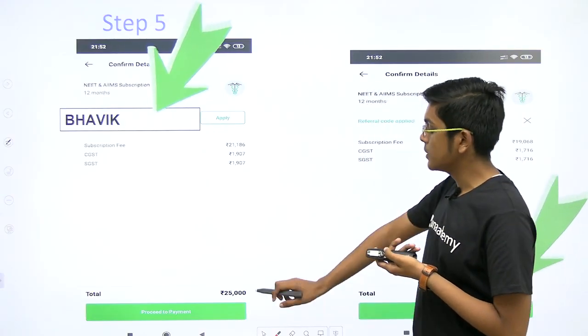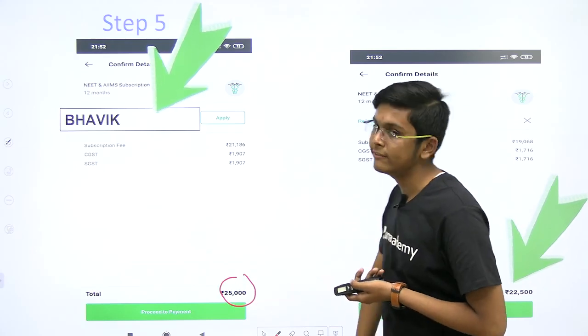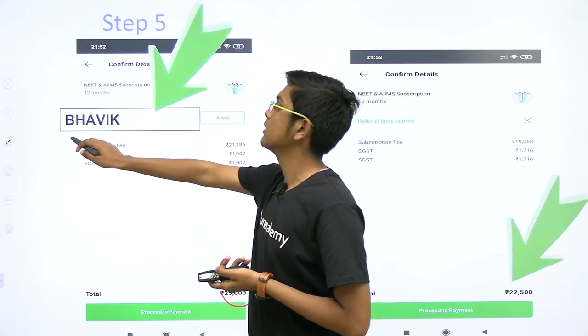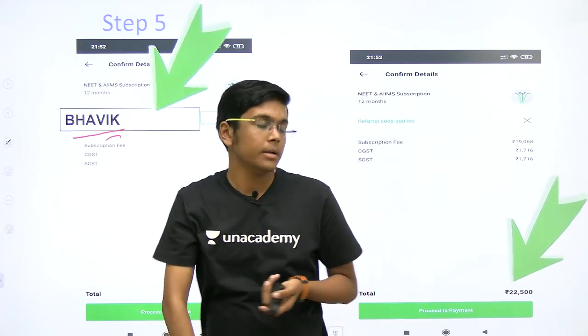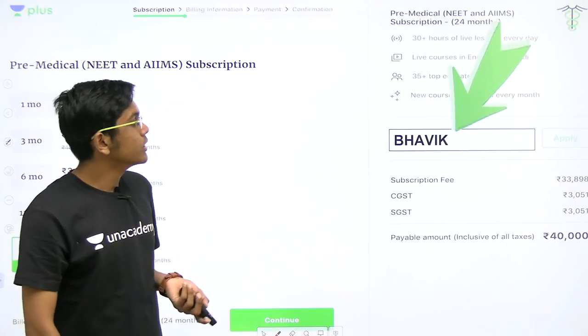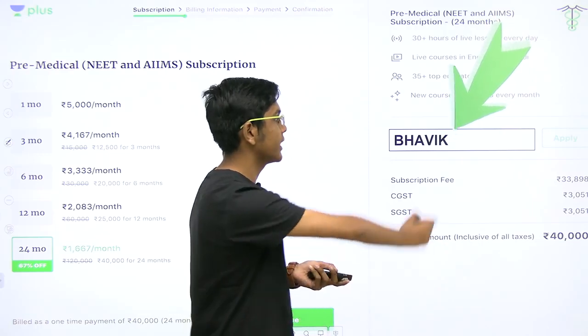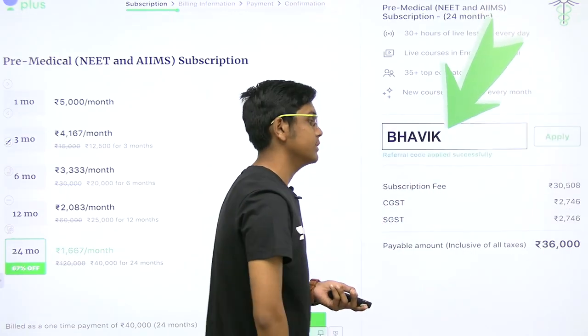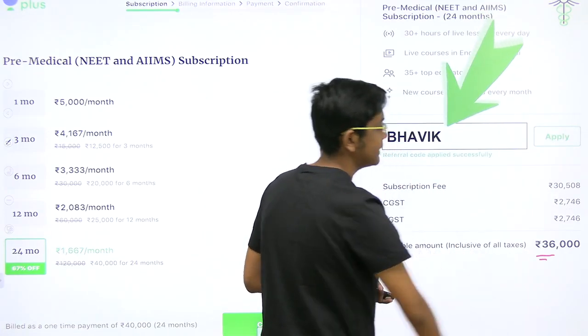The subscription for one year of NEET and AIIMS preparation costs 25,000 but you can use the code Bhavik and get a 10% discount to get it for 22,500. Also the two-year course costs 40,000 but again you can use the code Bhavik and get the 10% discount to get it at 36,000.